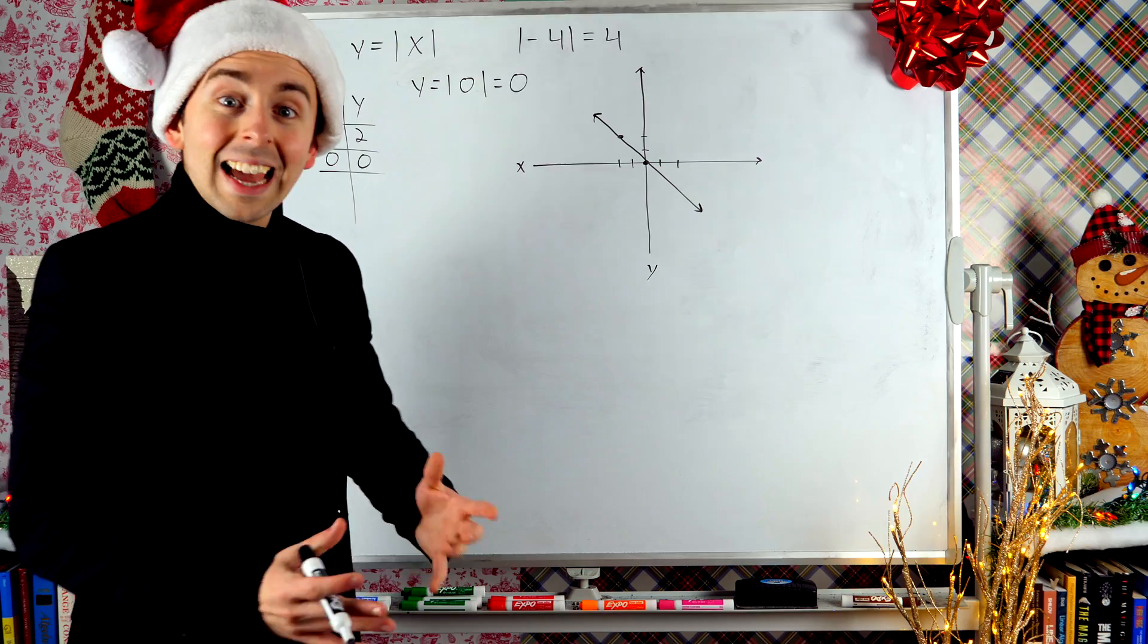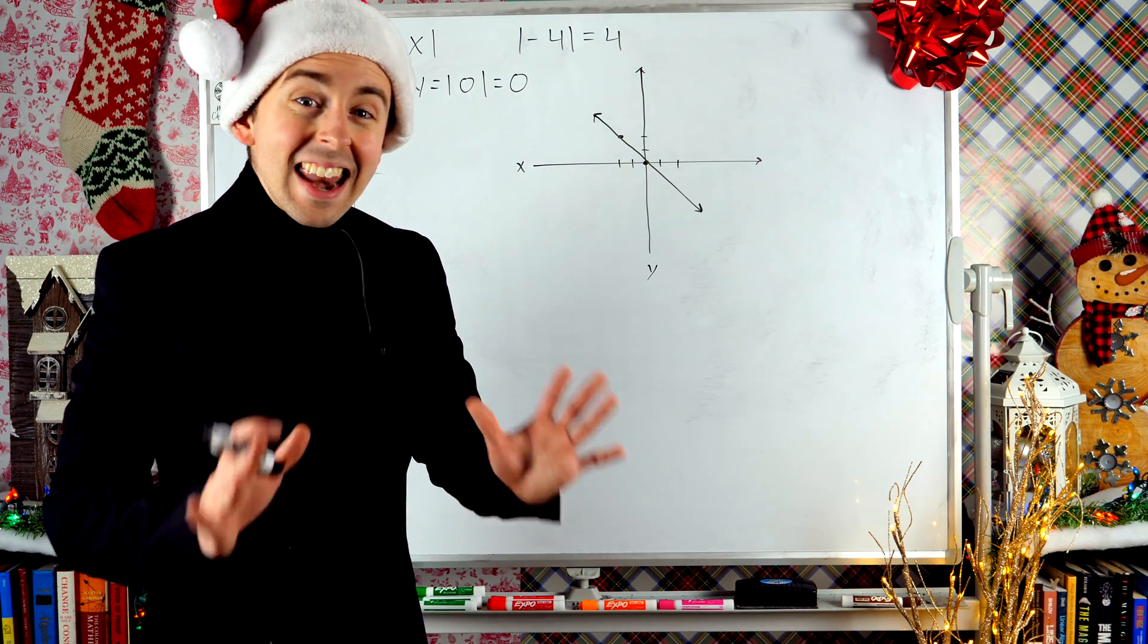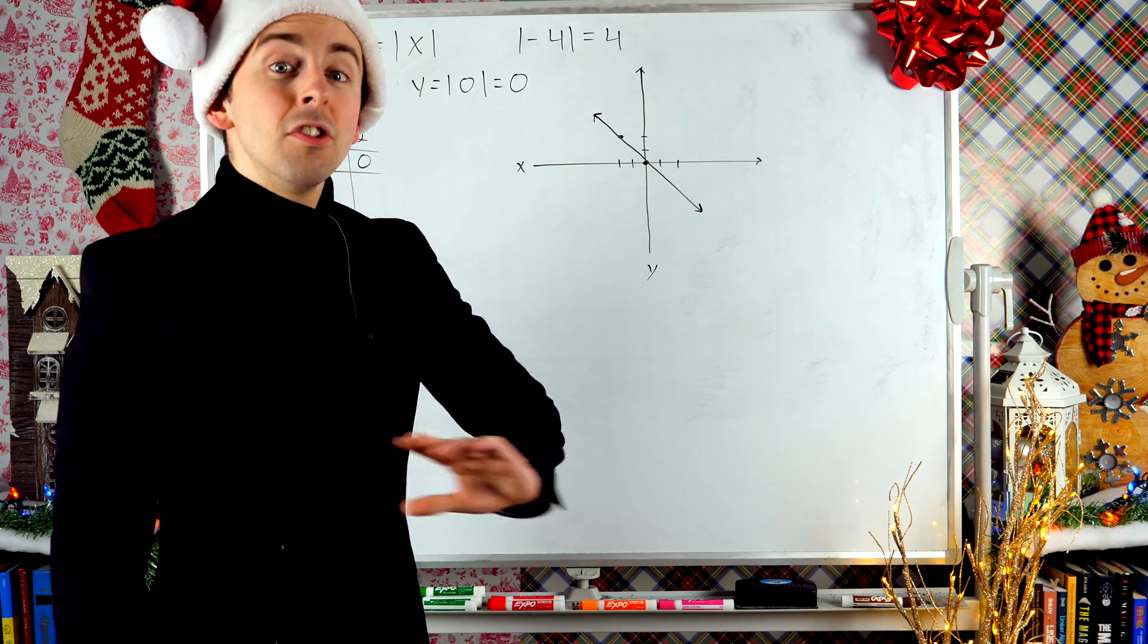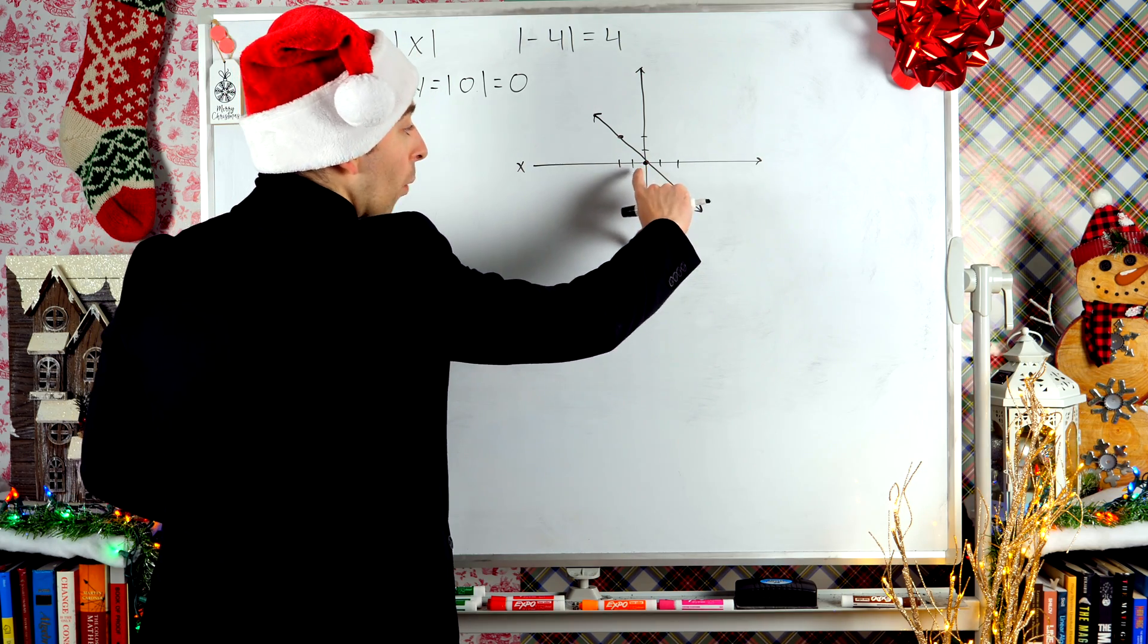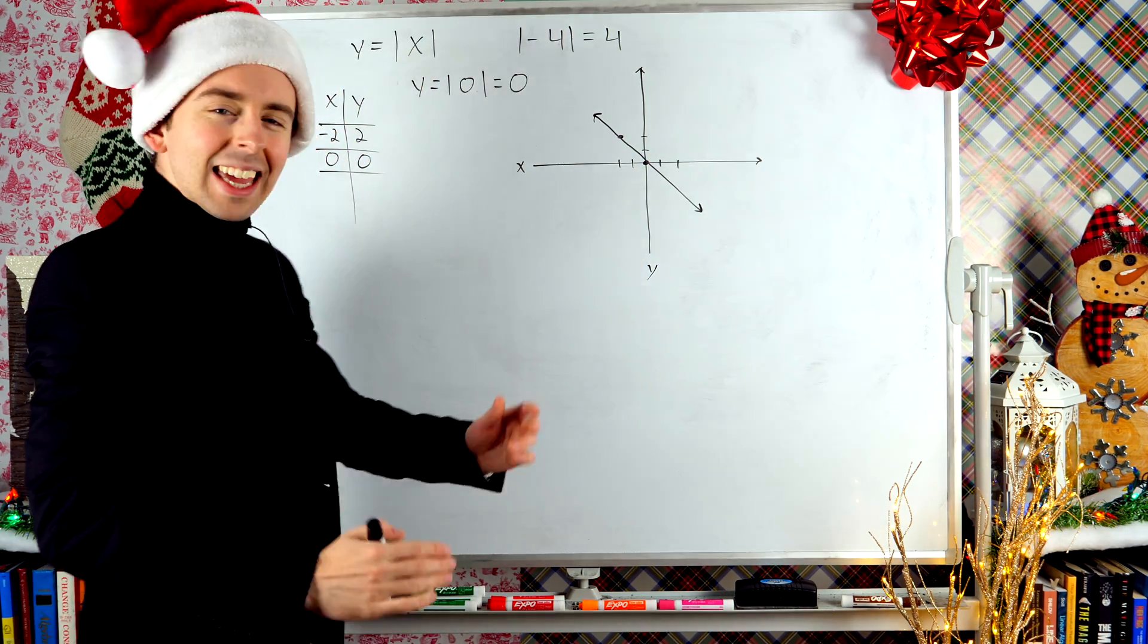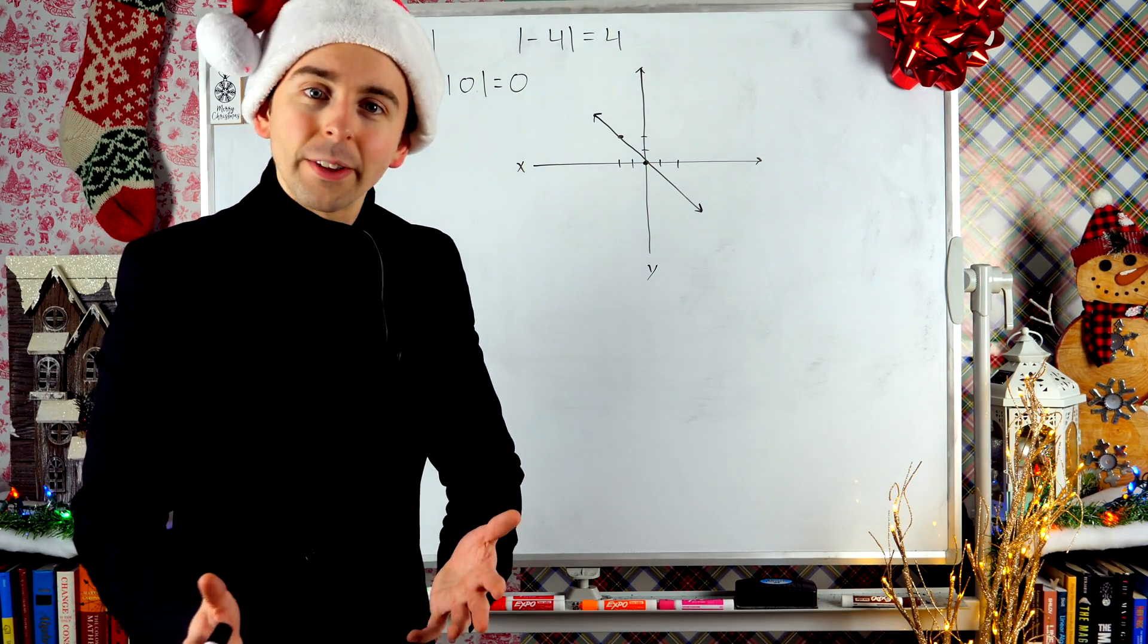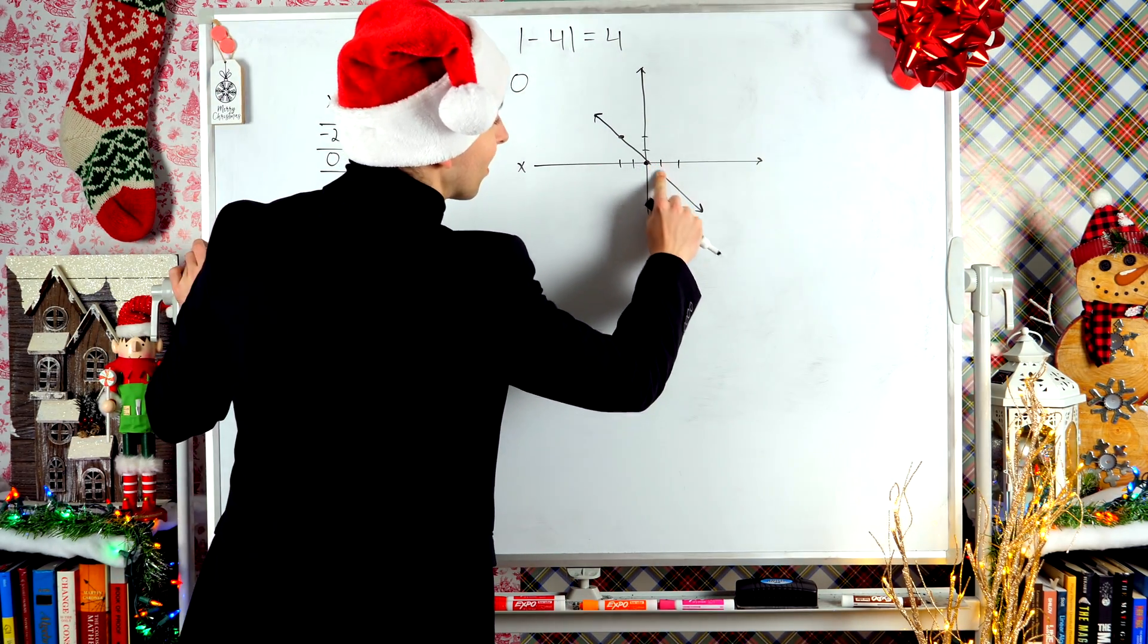Absolute value gets rid of negatives. So the absolute value can never be negative. So I know that there's no way this graph should come down here where y is negative. I can't be down there because y is the absolute value of x. An absolute value is not negative. So there's no way that this is what the graph looks like.